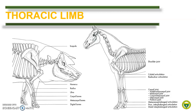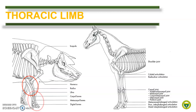The bones of the thoracic limb include the scapula or the shoulder bone, the humerus or the bone of the arm or brachium, the radius and ulna forming the bones of the forearm or antebrachium, the carpals, metacarpals, and the bones of the digits. It is also important to recall the joints present in the thoracic limb.